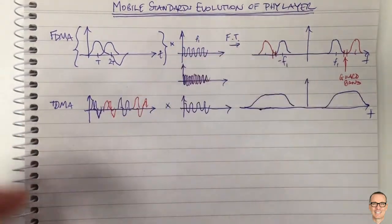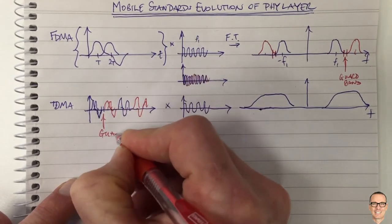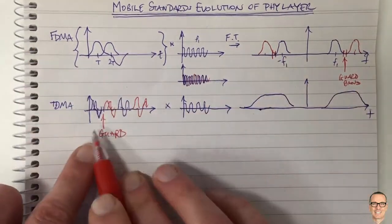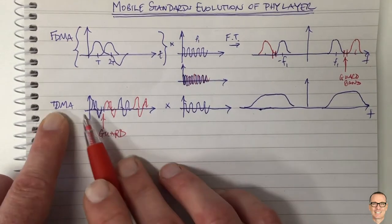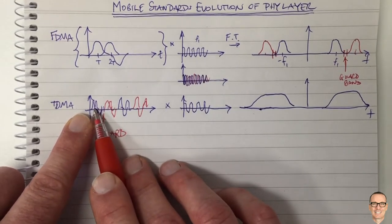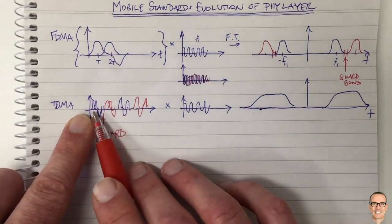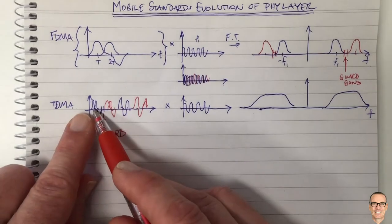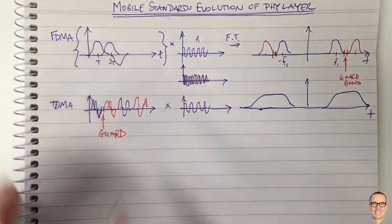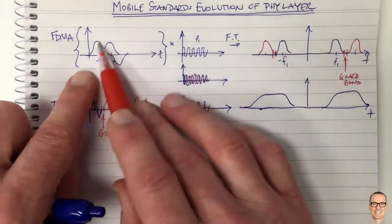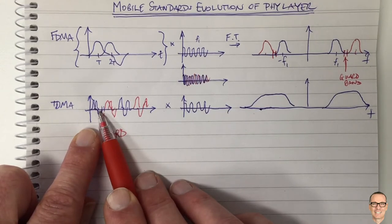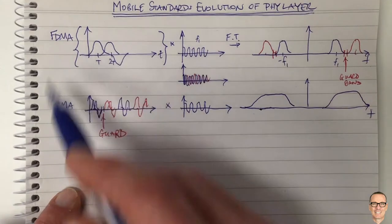What are the challenges? You need guard bands in the time domain, just as you had guard bands in the frequency domain for FDMA. Another downside is that equalization is more difficult because the symbols are being sent in a shorter time slot. Any multipath propagation — the difference in delays between two different paths — will affect these signals much more than the slower FDMA signals. Those same time-delay paths will really affect TDMA, and you need to do equalization.